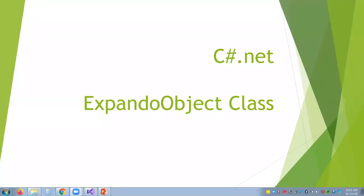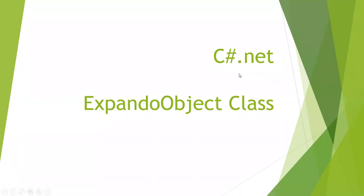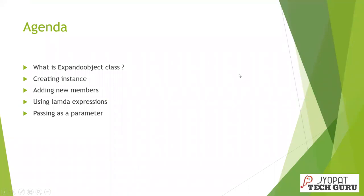Hi, this is Jyoti here, welcome to Jopat Tech Guru. In today's session of C# .NET, I'm going to discuss the ExpandoObject class — a very helpful class for developers who want to do something during runtime or in a dynamic way. The agenda covers: what is ExpandoObject class, how to create the instance, how to add new members using lambda expressions, how to implement ExpandoObject class, and how to pass it as a parameter.